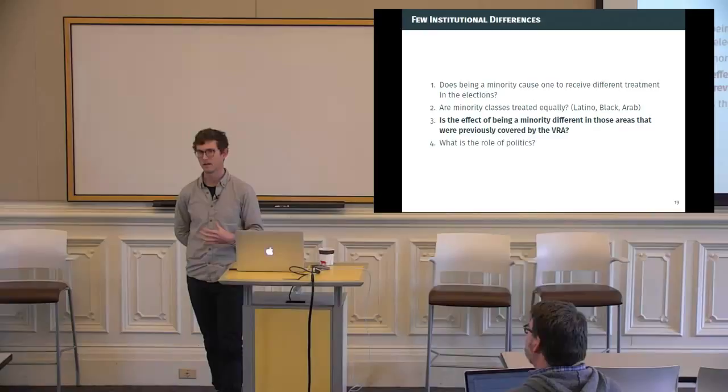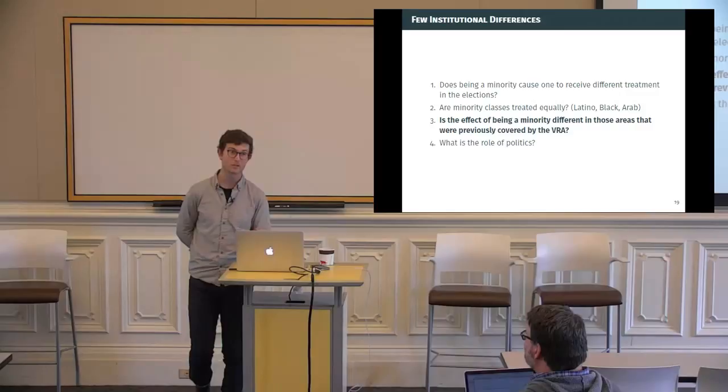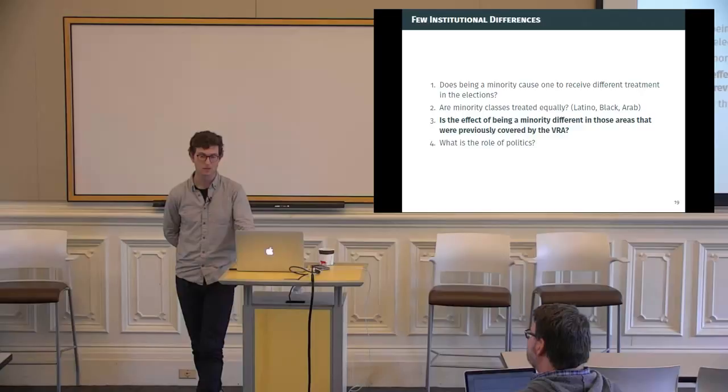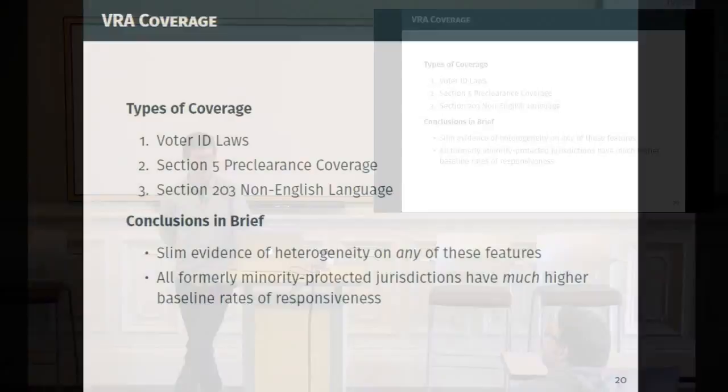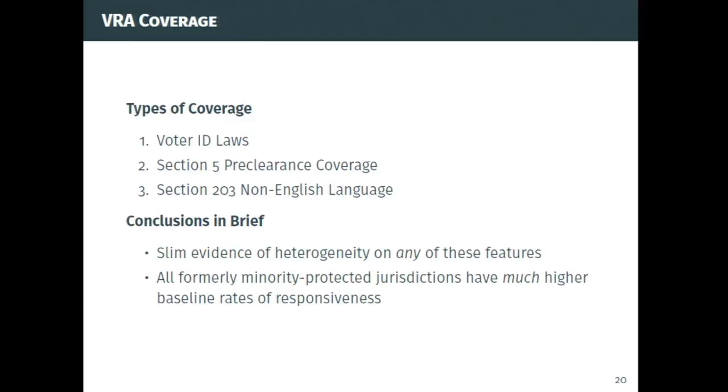So we'll look at it in three ways. Number one is voter ID laws. Number two is Section 5 preclearance coverage. And then the third of these is another VRA provision, which is a minority language provision. In a district, if a certain proportion of your population is non-English native speaking, and they do not have a certain level of education, high school graduation, then you have to provide election materials in the language, which is the predominant language. So in Chula Vista in San Diego, they were covered by Section 203 because there was a large population of foreign-born Spanish speakers who had become citizens and who were eligible to vote.